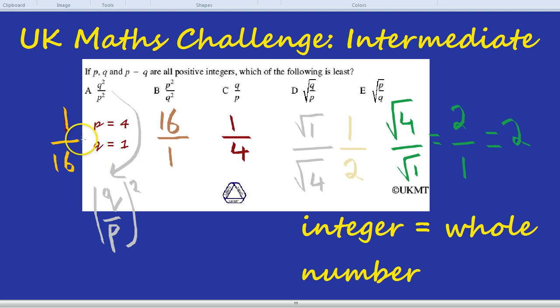So in this case, of 4 and 1, it's A, Q squared over P squared, which is the least.